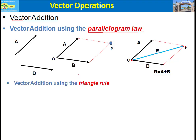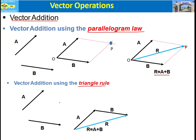Another important method to add vectors is to use the triangle rule. In the triangle rule, instead of connecting tail to tail, we connect the vectors head to tail. For example, with vector A and vector B in arbitrary directions, to add them using the triangle rule, connect the head of vector A to the tail of vector B. The resultant is then R equals A plus B.